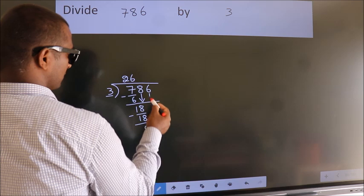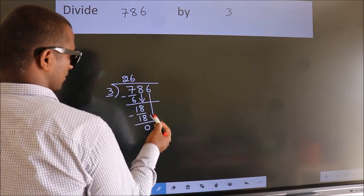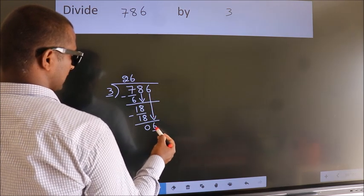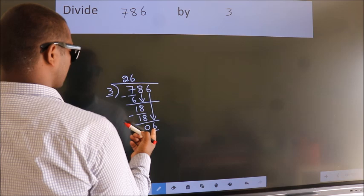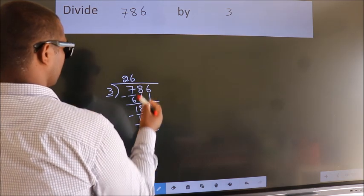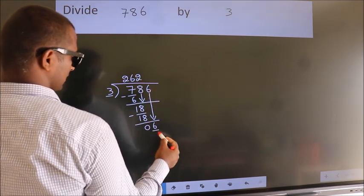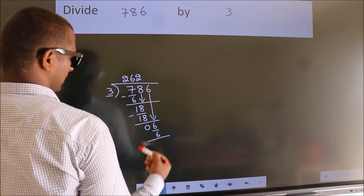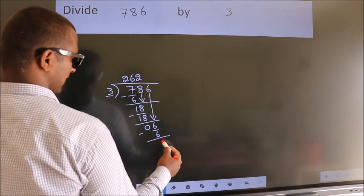After this, bring down the beside number. So, 6 down. So, 6. When do we get 6? In the 3 table. 3 times 2 is 6. Now we subtract. We get 0.